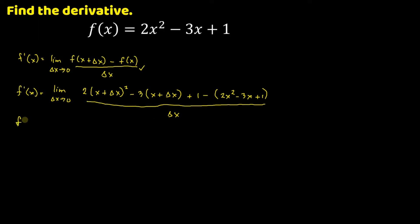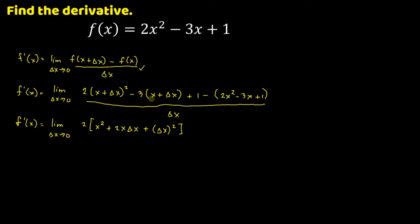So let's simplify. We have f prime of x equals the limit as delta x approaches 0. So we have 2, then expand x plus delta x: that will be x squared plus 2x times delta x, so 2x delta x. Note that delta x is a single term, so we cannot multiply x and delta x separately — that's why we get 2x delta x plus delta x squared. Then distribute negative 3 times x: negative 3x. Negative 3 times delta x is negative 3 delta x, plus 1.